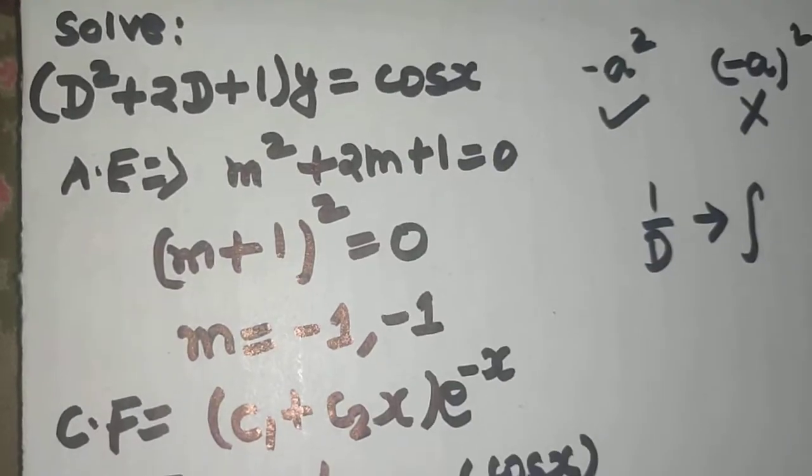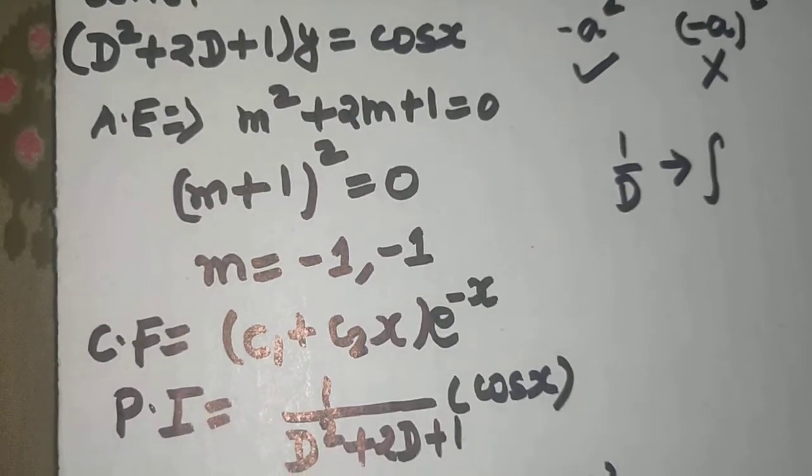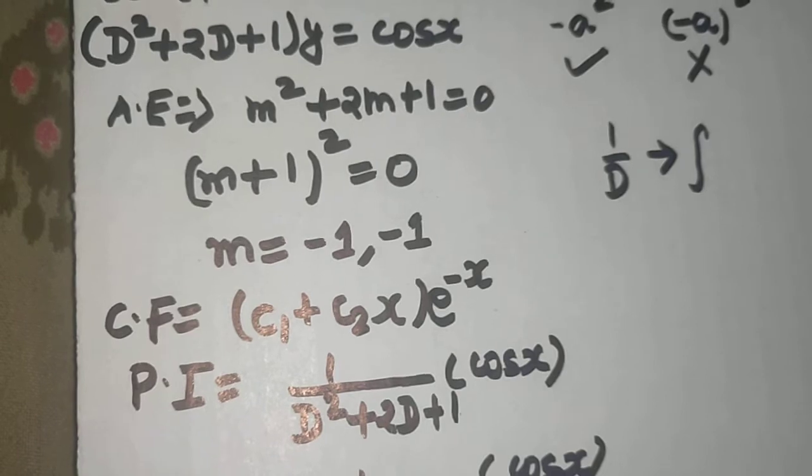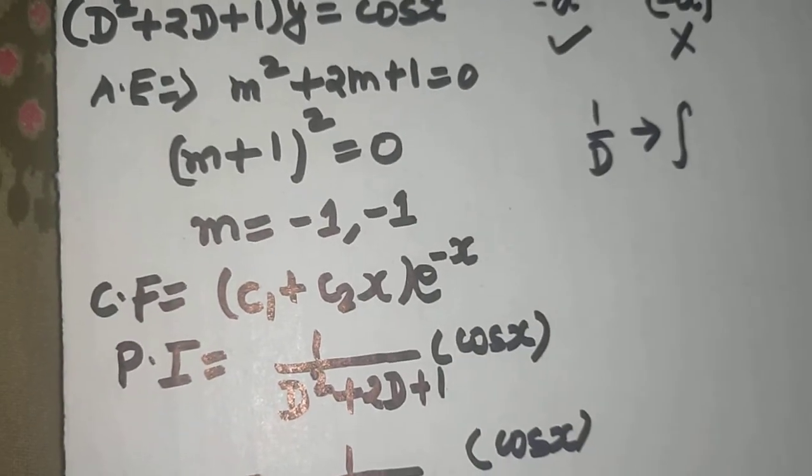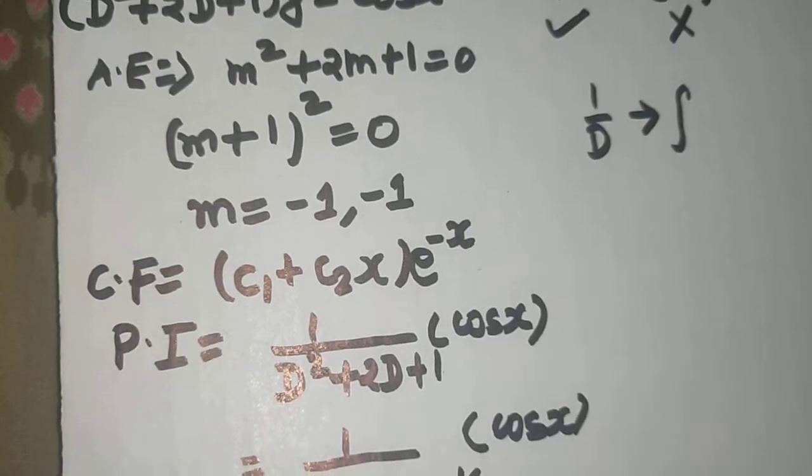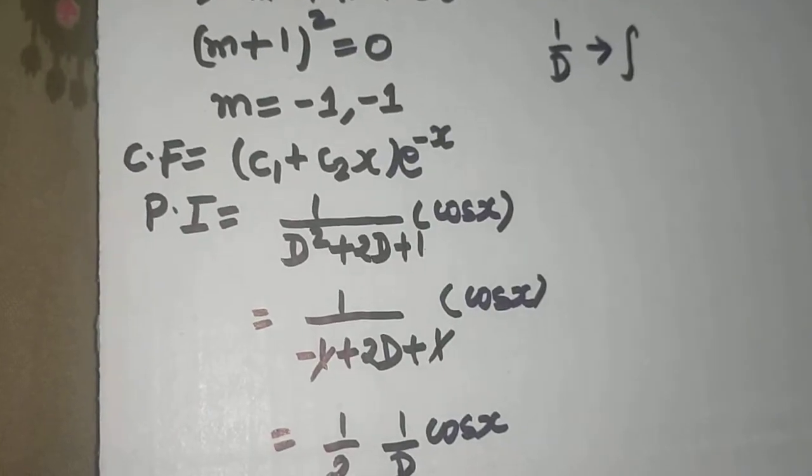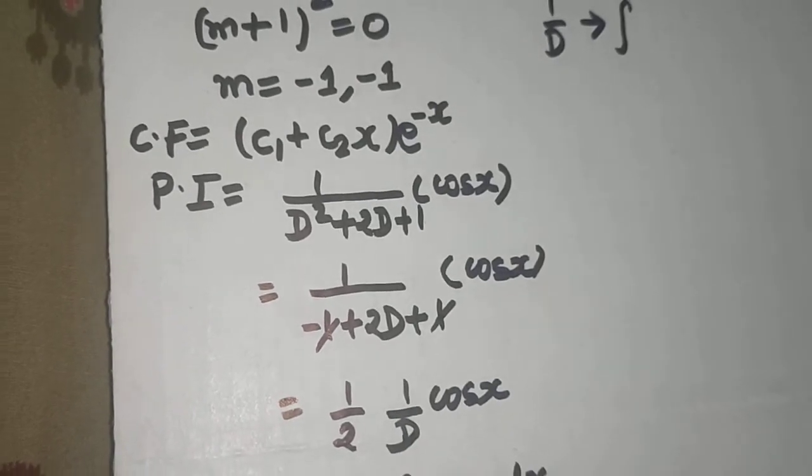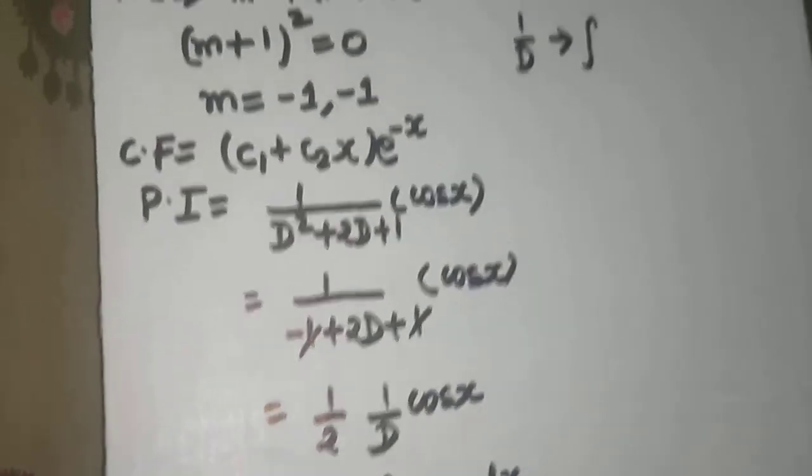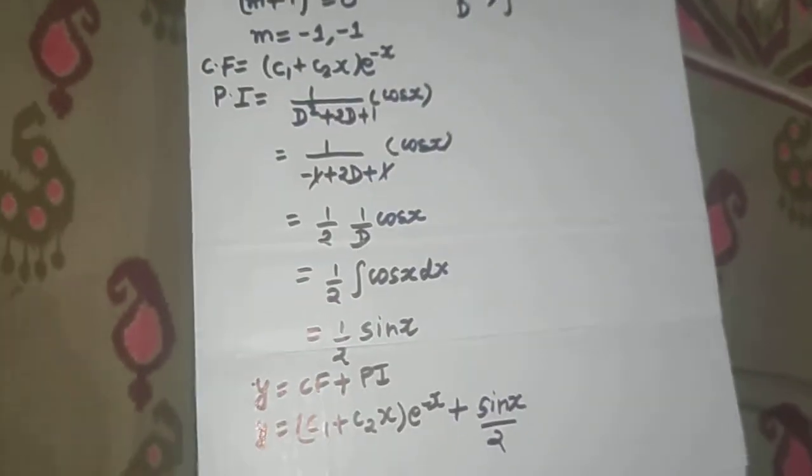Just you need to understand how to find the complementary function in case the roots are repetitive. So in this case minus 1 was one repeating. So c1 plus c2x e power mx. So m here is minus 1 and in particular integral if you have cos x, just replace d square by minus of a square and 1 by d is same as integration. So that made our life easier. Thanks and have a very nice day.